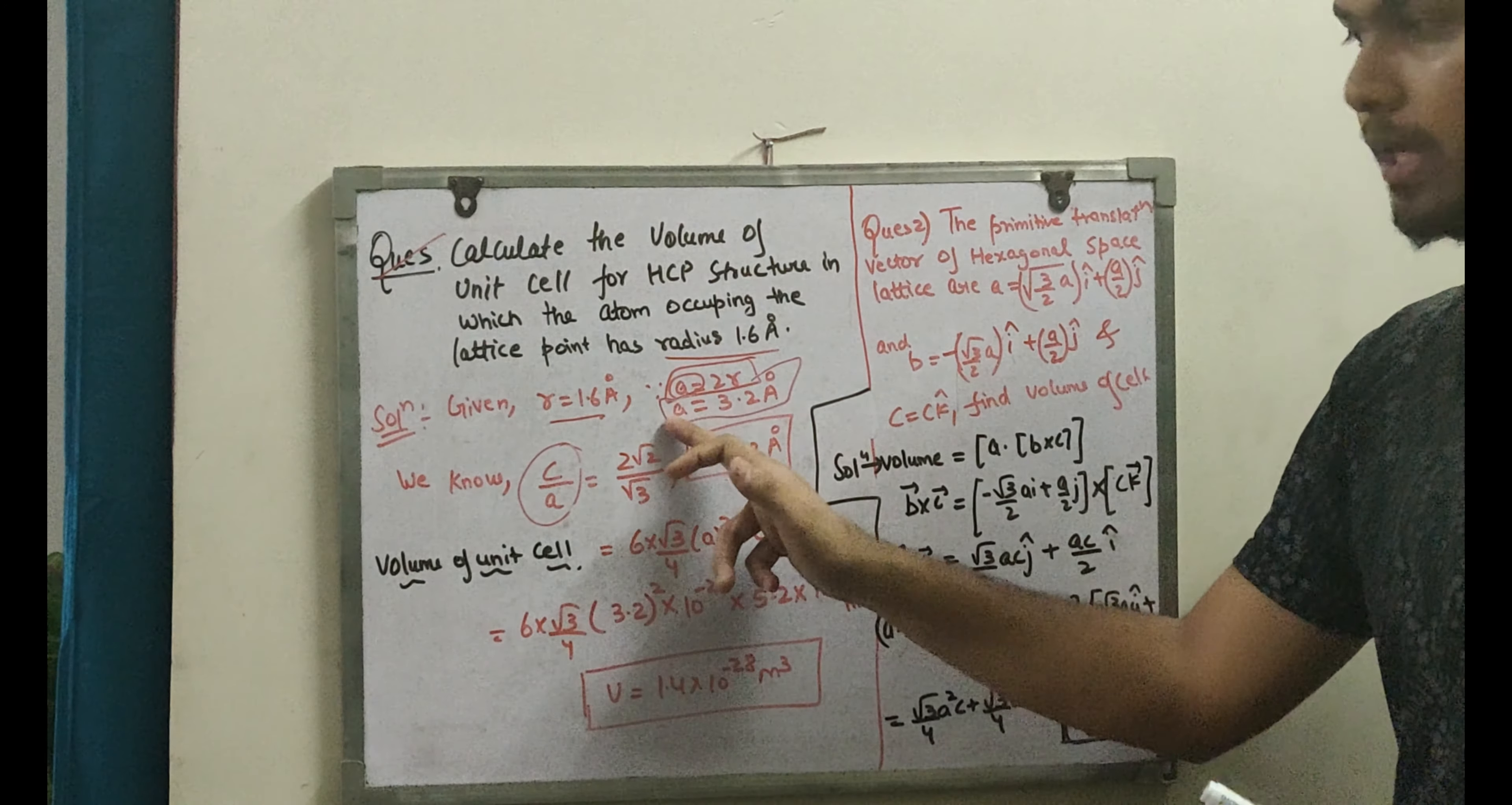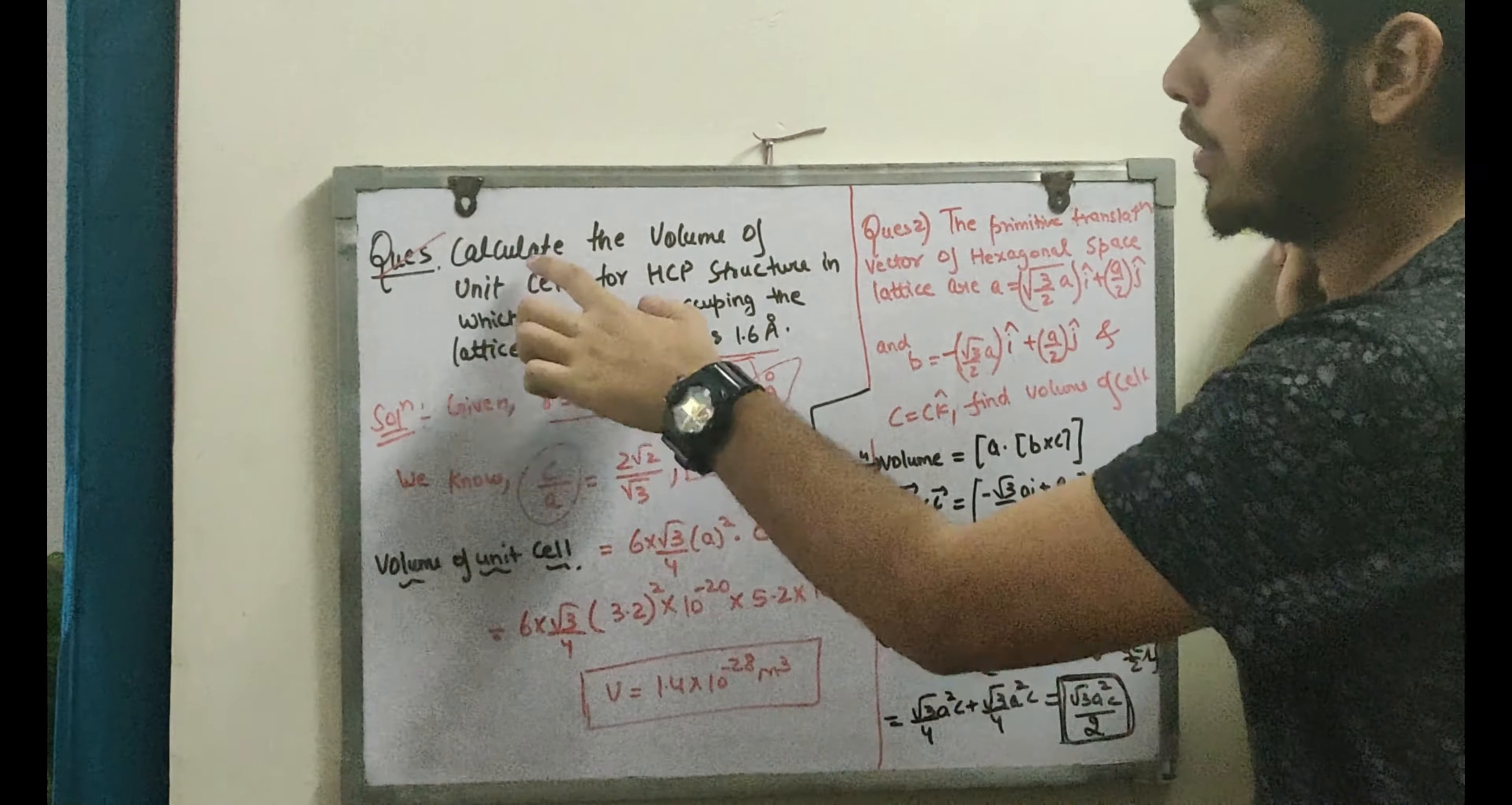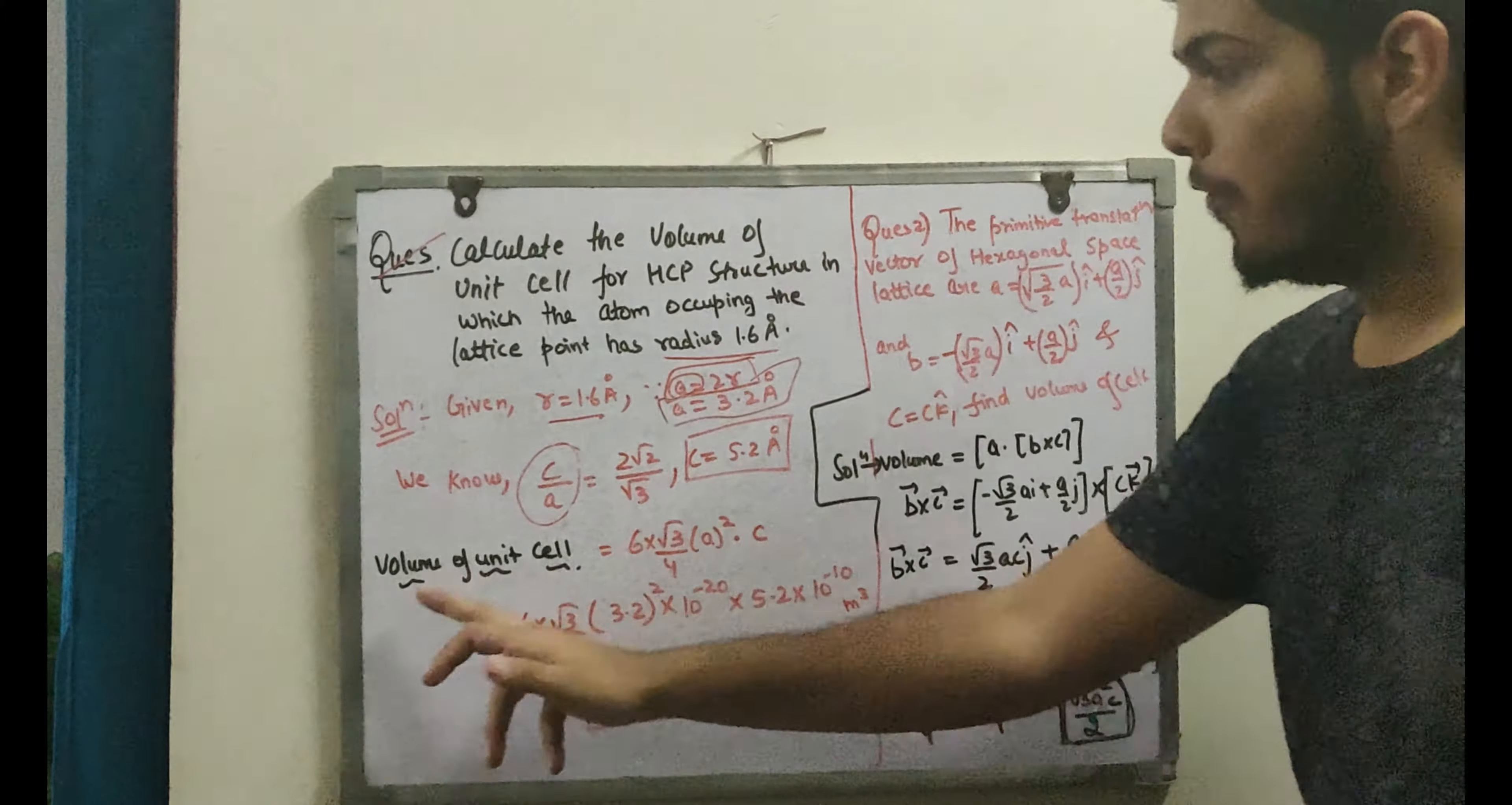So I have A value and I have C value. Now I will get my volume of unit cell. The question asks to calculate the volume.